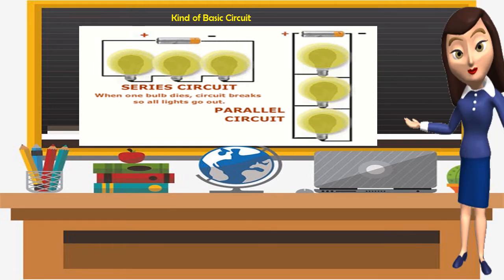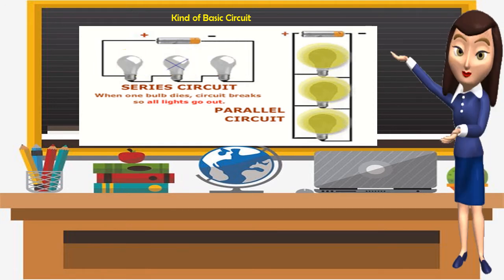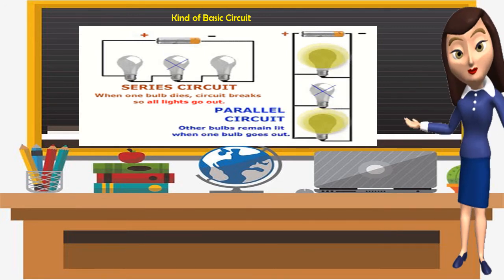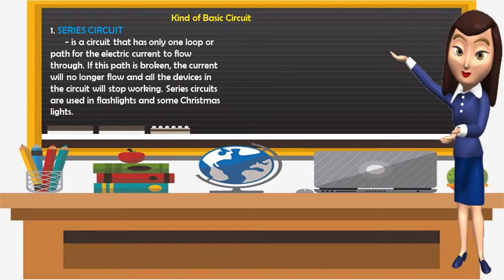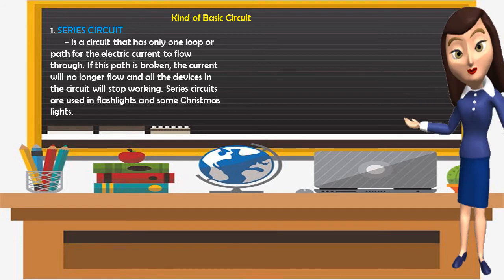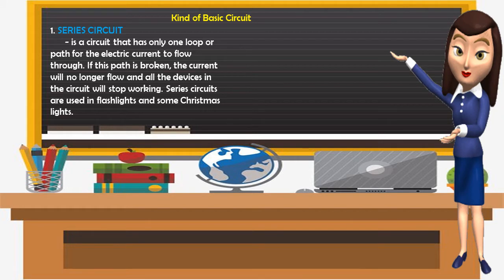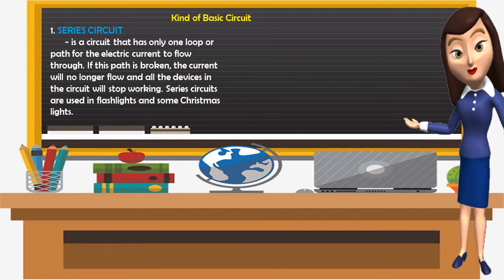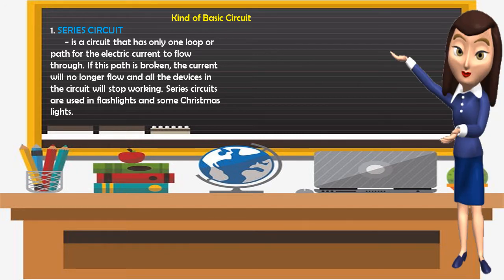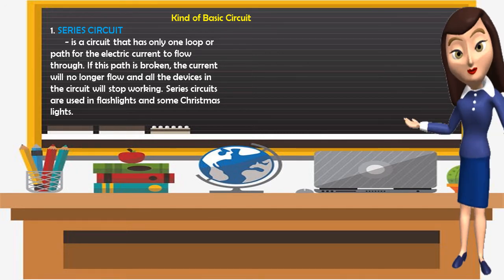A series circuit has only one loop or path for the electric current to flow through. If this path is broken, the current will no longer flow and all the devices in the circuit will stop working. Series circuits are used in flashlights and some Christmas lights.